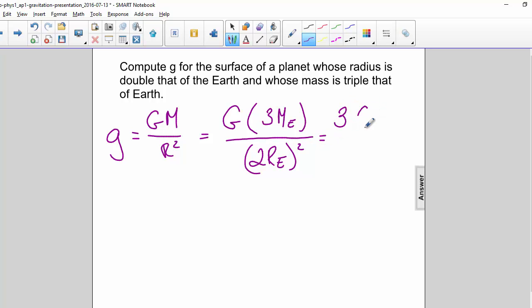So we can factor out the three, and factor out a two squared, which is four.